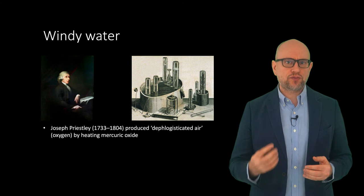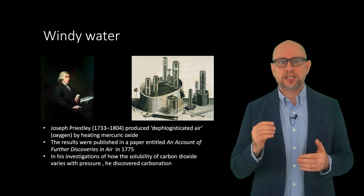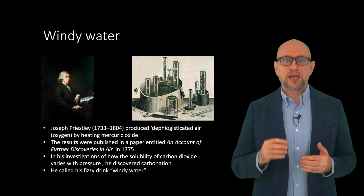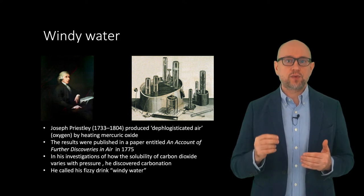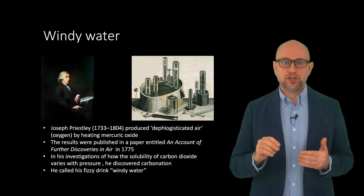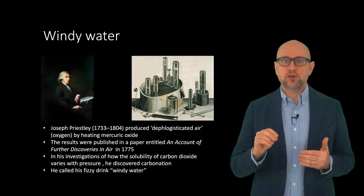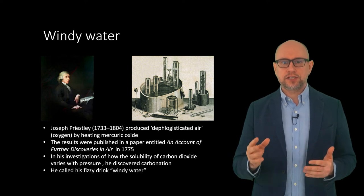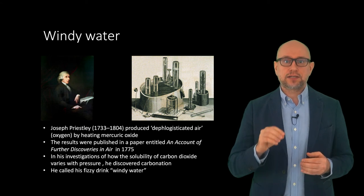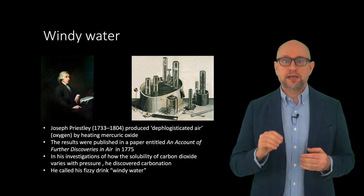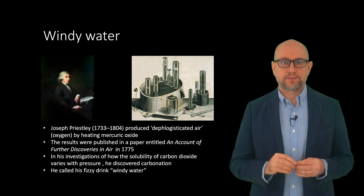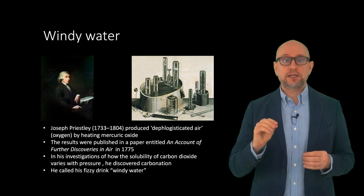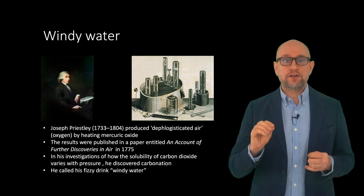Perhaps the person most frequently associated with the discovery of oxygen is the English theologian Joseph Priestley. On the 1st of August 1774, Priestley conducted an experiment in which he focused sunlight on mercury oxide in a glass tube, which liberated a gas he called dephlogisticated air, because it supported combustion and was totally consumed. He noted that candles burned brighter in this gas and mice were more active and lived longer breathing this gas. Priestley published his findings in 1775 in a paper titled An Account of Further Discoveries in Air.